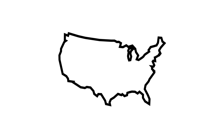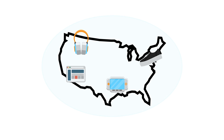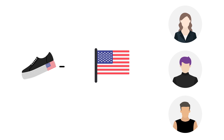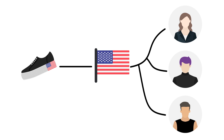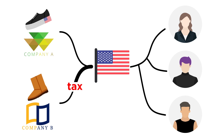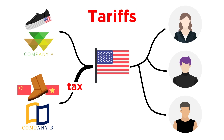Countries might want to give preference to goods made at home, so they might make it harder for consumers to have access to goods from other countries. For example, if the United States government wants Americans to buy American-made shoes, like those made by Company A, it might place a tax on shoes made by Company B, if those shoes are imported from places like China and Vietnam. These taxes on imports are called tariffs.